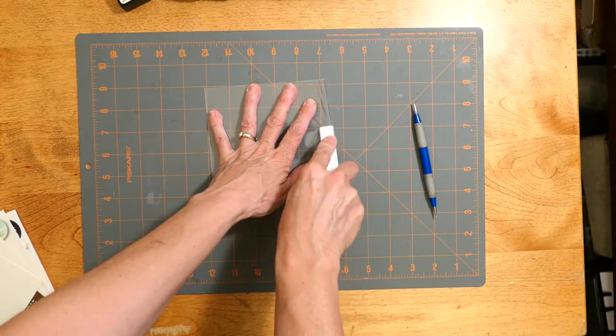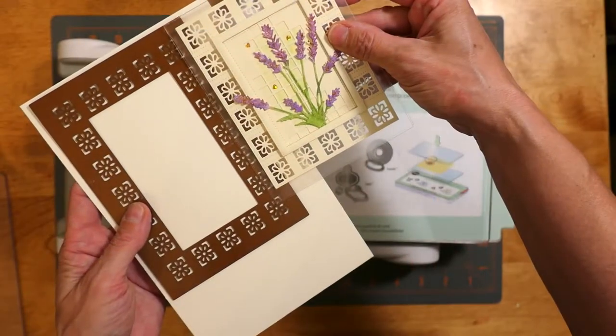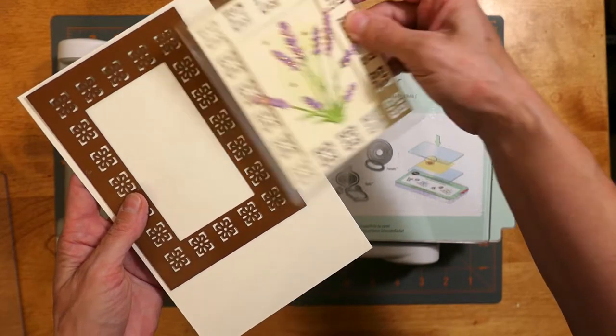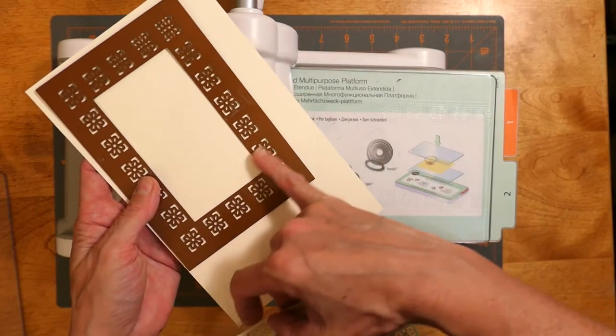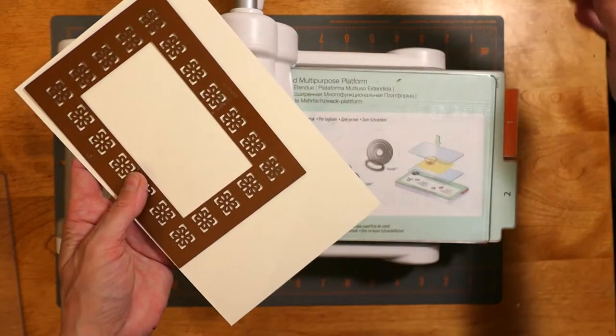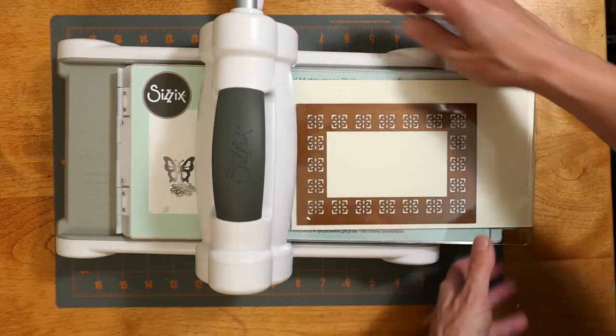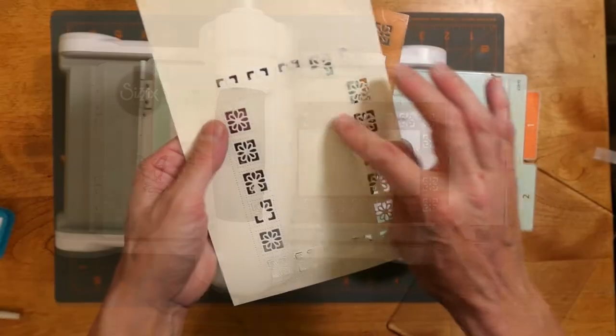This die by Sue Wilson is the Canadian collection die and it's beautiful. It was too large for this card that I wanted to create, and so I'm going to show you how I made it smaller with the frame. I just started by die cutting it as normal.